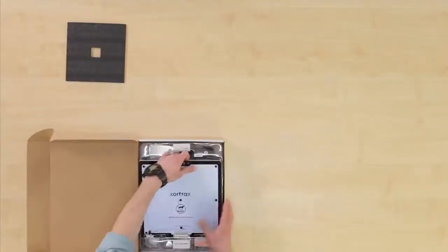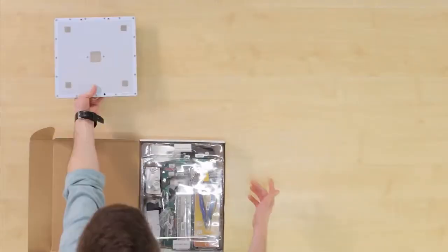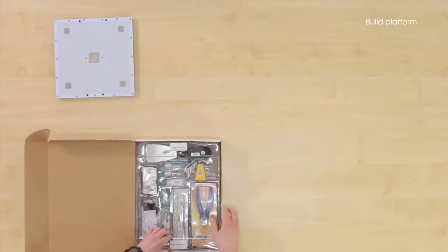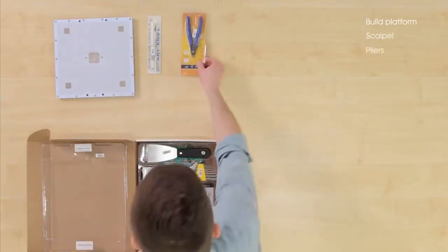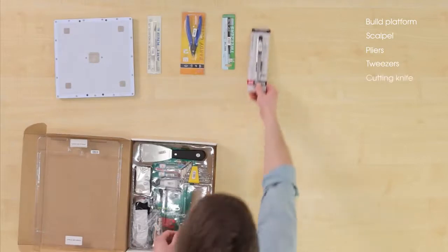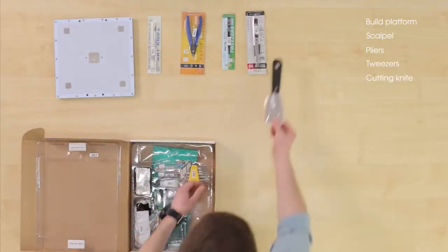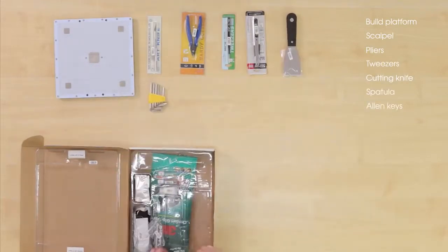In the starter kit you will find the build platform, a scalpel, pliers, tweezers, a cutting knife, a spatula, and allen keys.